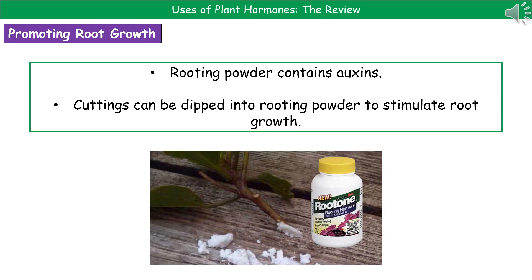The second use we're going to look at is promoting the growth of roots. You can buy this stuff called rooting powder, and again it contains auxins. So if you want to take a cutting from a plant to grow an identical clone, you cut that little bit off the plant, dip it into the rooting powder, and that's going to stimulate the growth of roots from that cut part of the stem. As a result, it will grow its own roots and the plant will survive on its own.